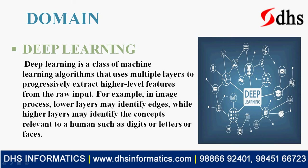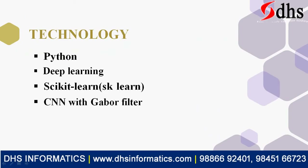Features are extracted and animals are identified mainly based on edges — just as humans identify an elephant, tiger, or lion based on edges. The technologies used in this project are Python 3.6 or 3.7, deep learning, OpenCV, scikit-learn, and Convolutional Neural Network with the pre-processing technique Gabor filter.